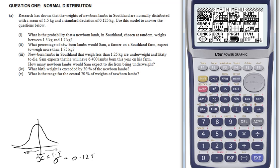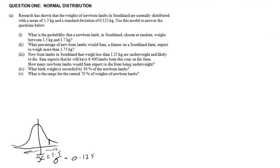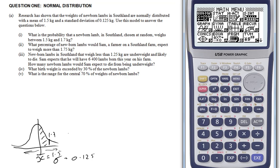It says what's the probability of a newborn lamb in Southland chosen at random weighing between 1.5 and 1.75. So if I'm thinking about my picture, 1.5 was my mean and 1.75 or 1.7 will be there, so I know it's between those two values. So let's go and have a look at our graphics calculator.